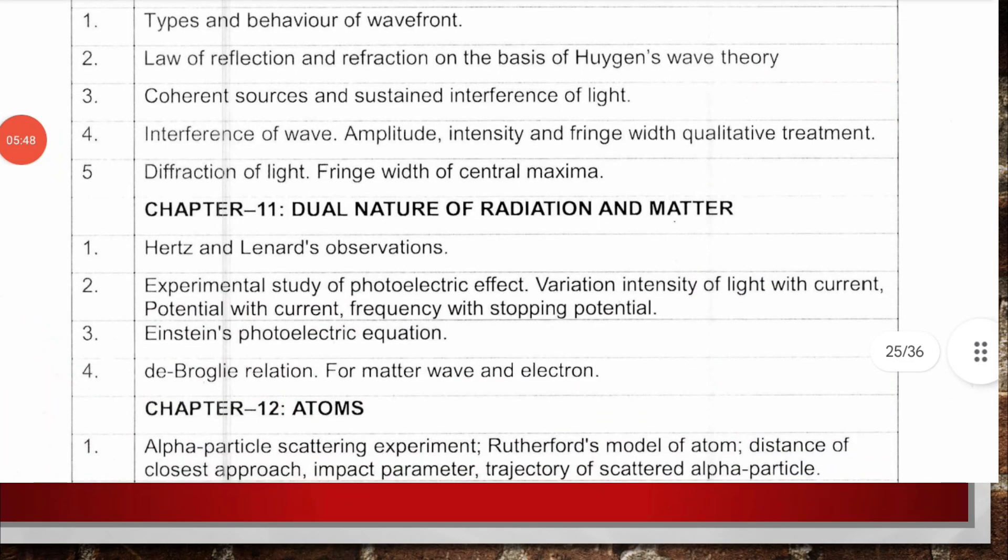Chapter 11, Dual Nature of Radiation and Matter: Hertz and Lenard's observations, experimental study of photoelectric effect including variation of light intensity with current, potential with current, frequency with stopping potential and related graphs, Einstein's photoelectric equation, de Broglie relation for matter waves and electrons.